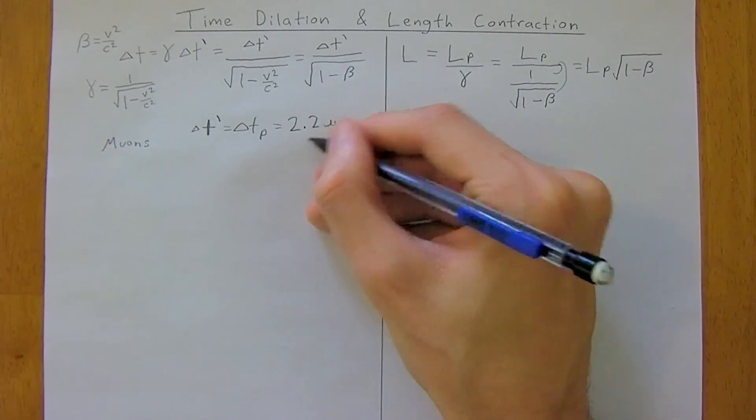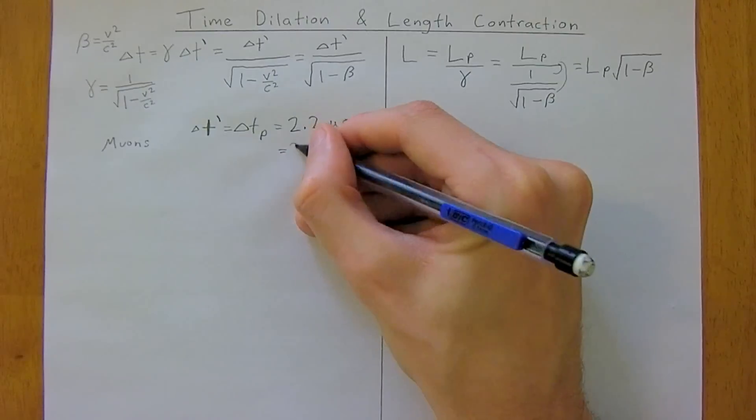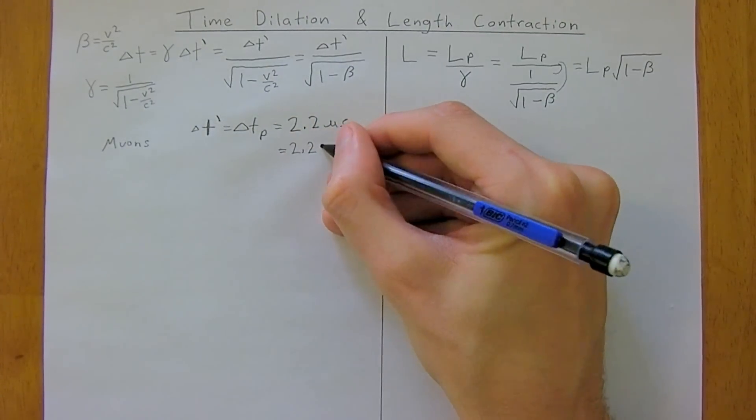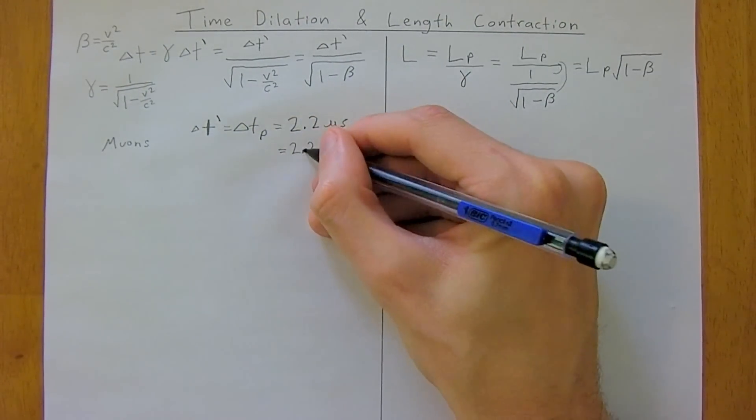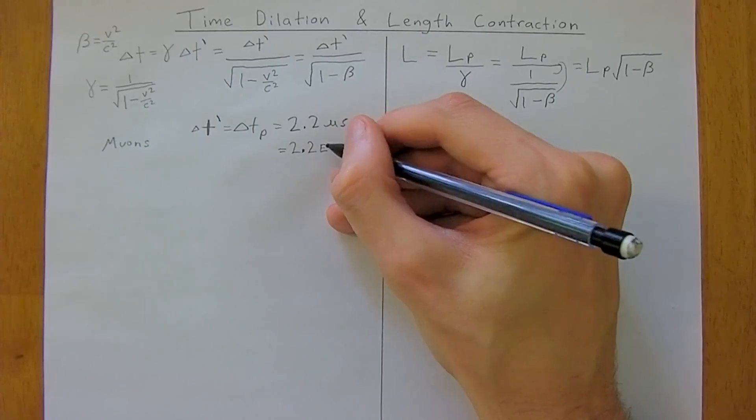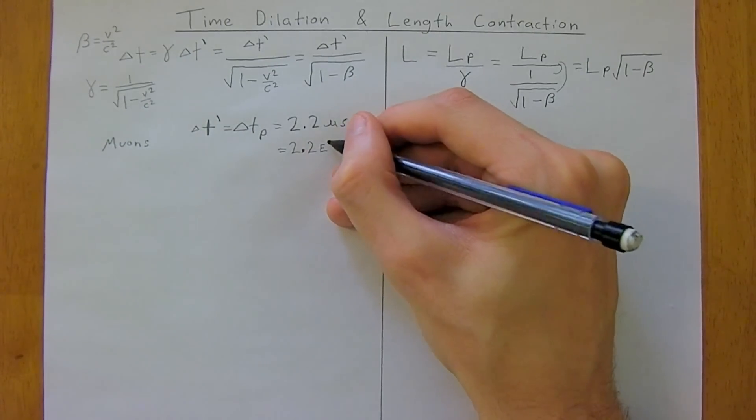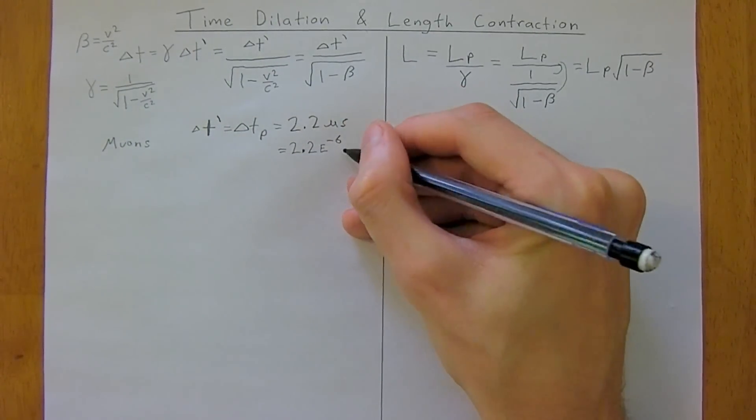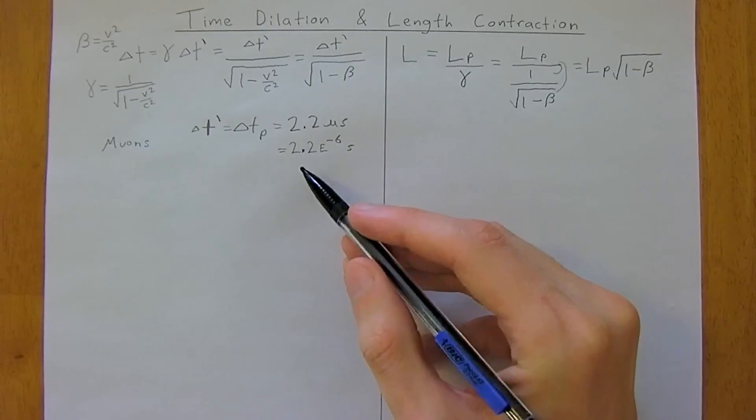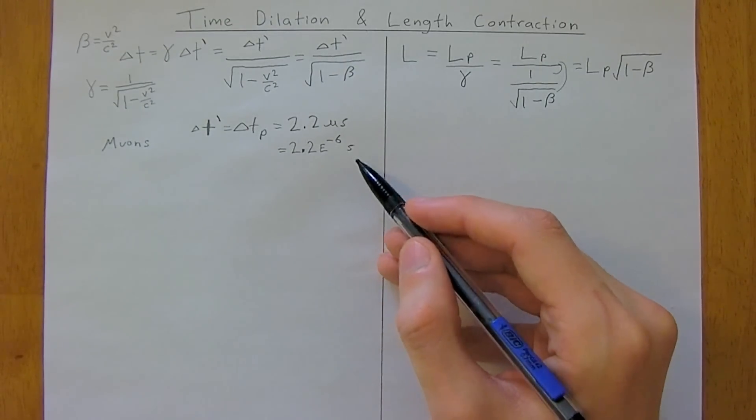which is 2.2 times 10 to the negative 6 seconds. So 2.2 times 10 to the negative 6 seconds.